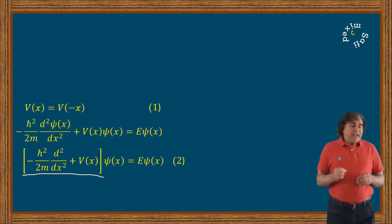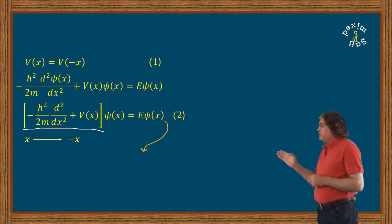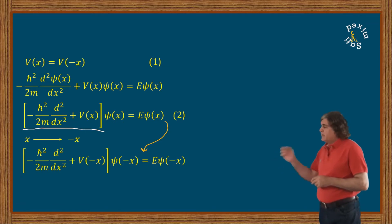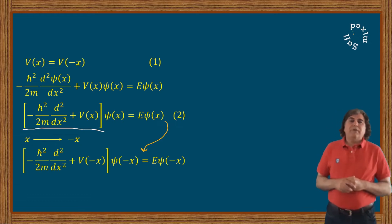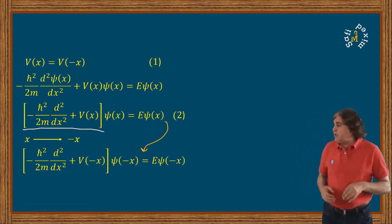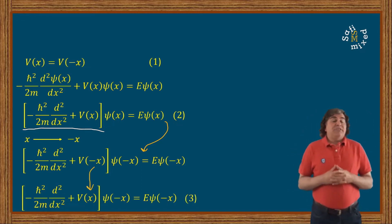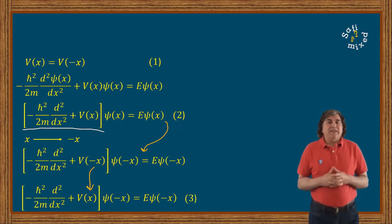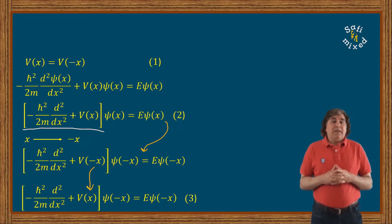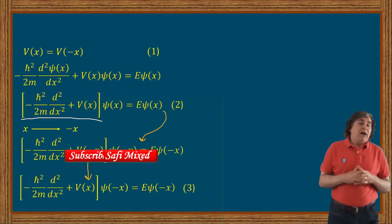Now let us invert the coordinate axis, that is, change the sign of x in the equation. The argument of ψ changes from x to −x, and the argument of V changes from x to −x. Using the symmetry condition V(−x) = V(x), the equation can be rewritten. This shows that ψ(−x) is also an eigenfunction of the same operator for eigenvalue equal to E. So we now have two eigenfunctions corresponding to the same eigenvalue: ψ(x) and ψ(−x).